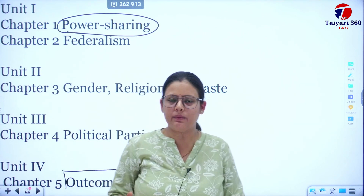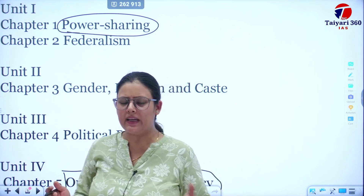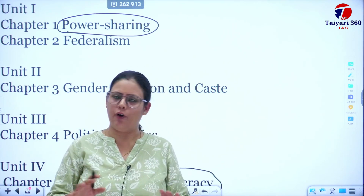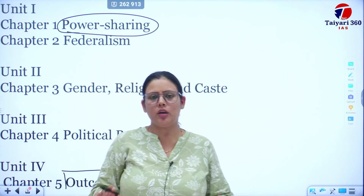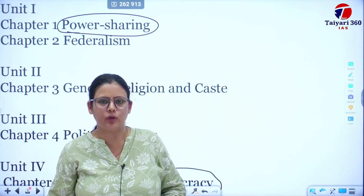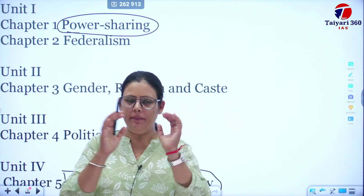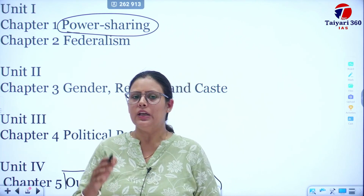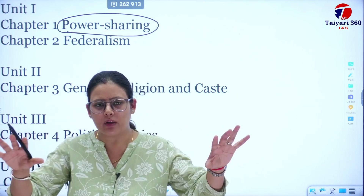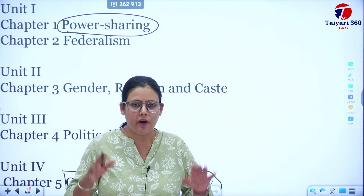Today we will know what power sharing is and why it is necessary. We have studied many chapters and concepts. We know that in our country there is a democratic form of government, and the government has three organs: legislature, executive, and judiciary. Legislature makes the law, executive implements it, and judiciary oversees the justice system. The power is divided among them, which means power sharing is necessary.